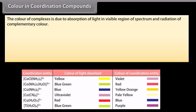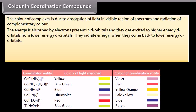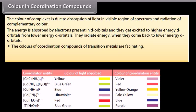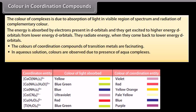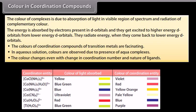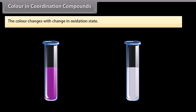Color in Coordination Compounds. The color of complexes is due to absorption of light in the visible region of the spectrum and radiation of complementary color. Energy is absorbed by electrons in d orbitals, which get excited to higher energy d orbitals and radiate energy upon returning to lower energy orbitals. The colors of coordination compounds of transition metals are fascinating. In aqueous solution, colors are observed due to aqua complexes. The color changes with coordination number, nature of ligands, and oxidation state.